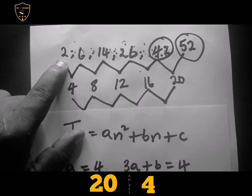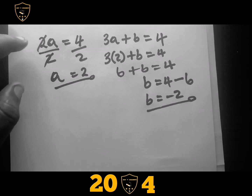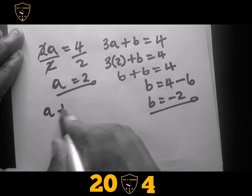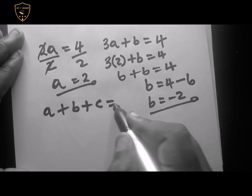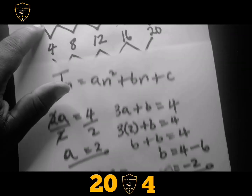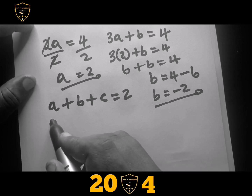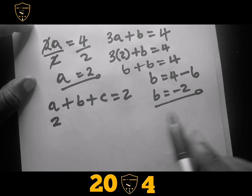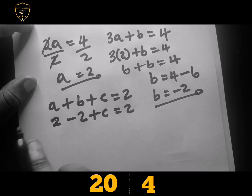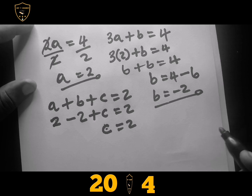To find c, we need the value of a, the value of b, and the first term of the given sequence, which is 2 in this case. We say a plus b plus c equals the first term of the given sequence, which is 2. We already know a is 2 and b is negative 2. So 2 plus negative 2 plus c equals 2 — those cancel each other, and c equals 2.